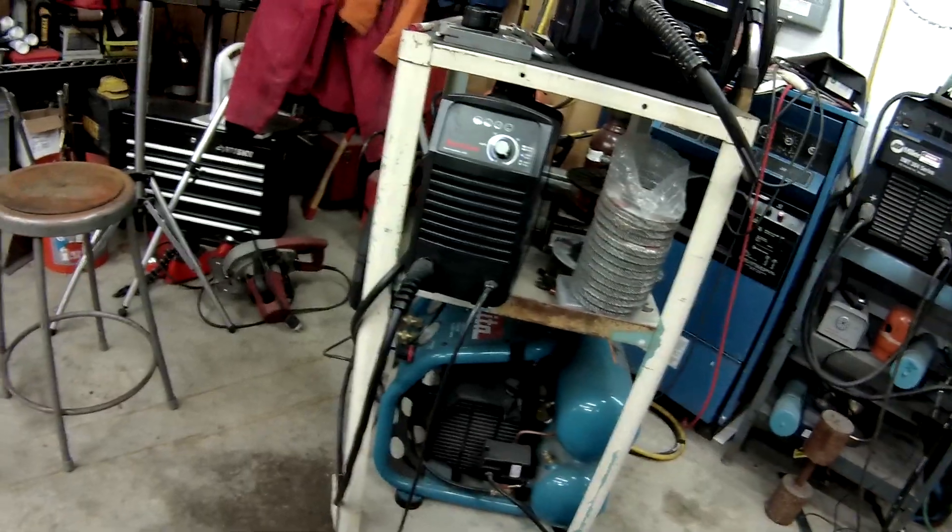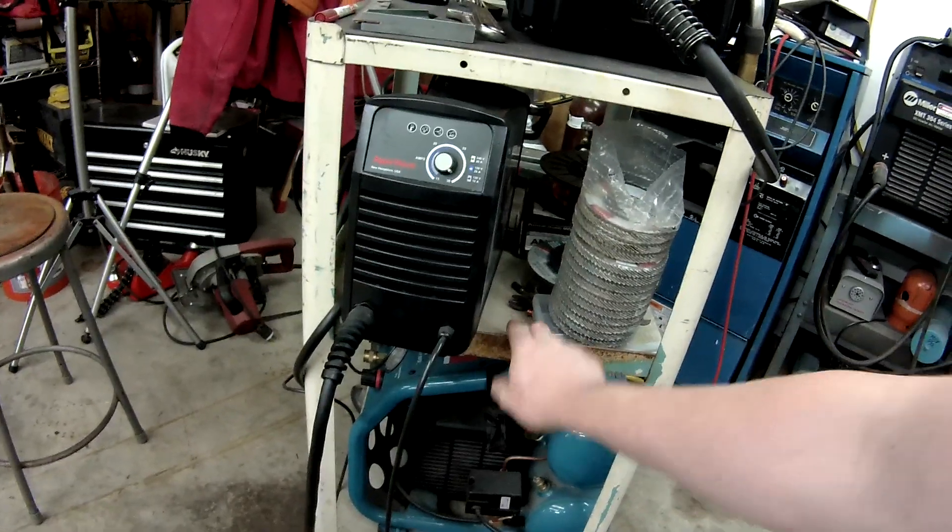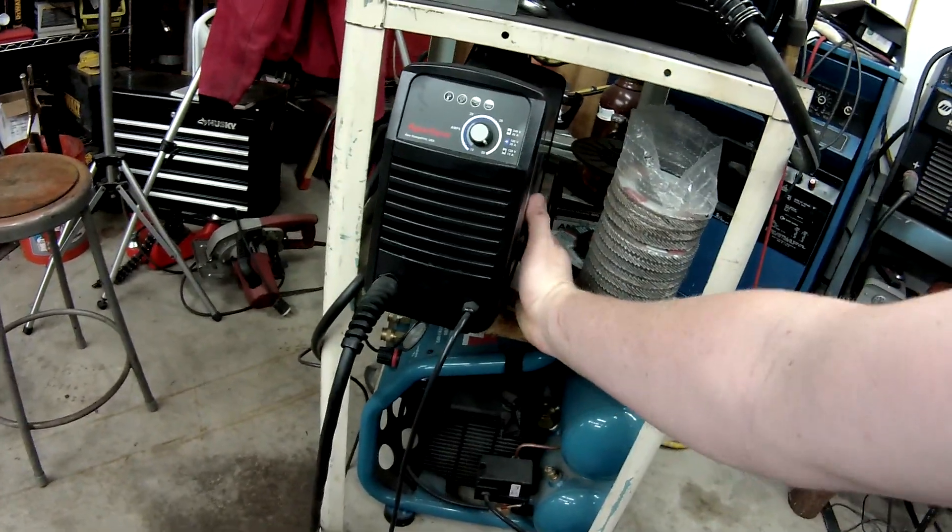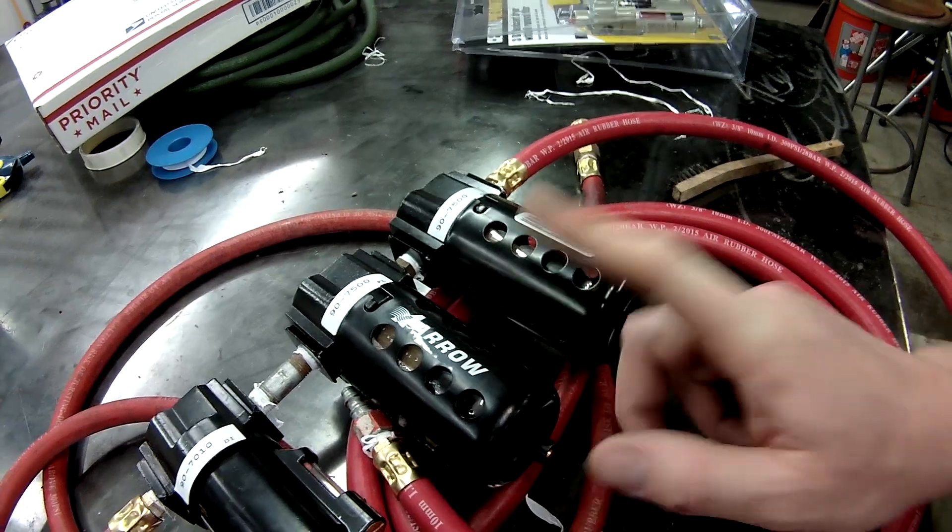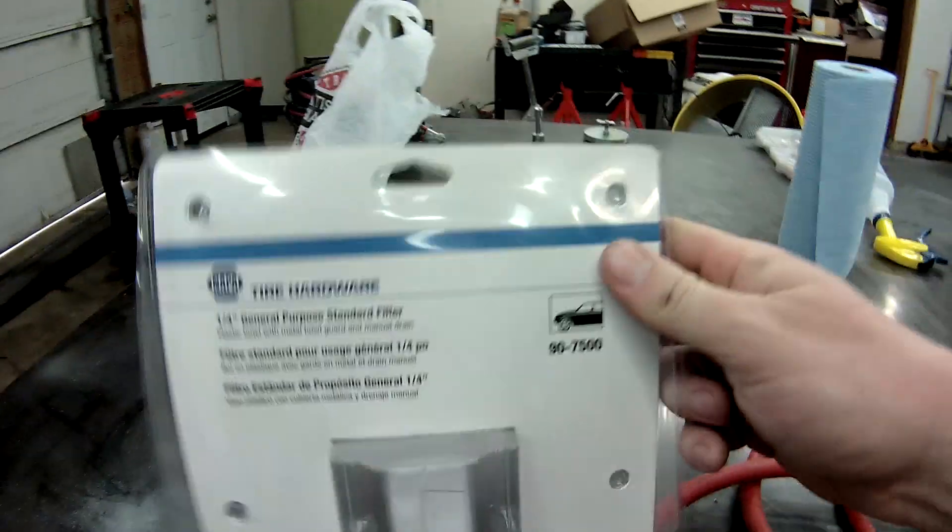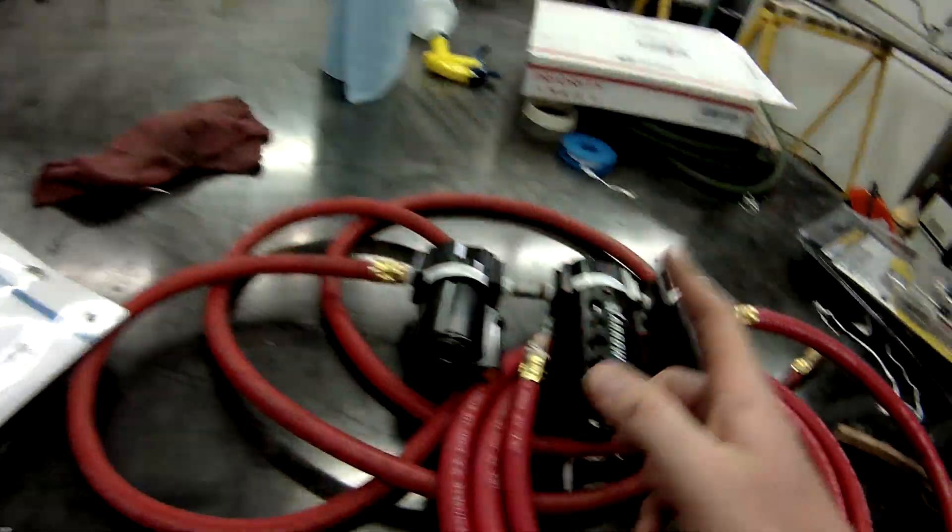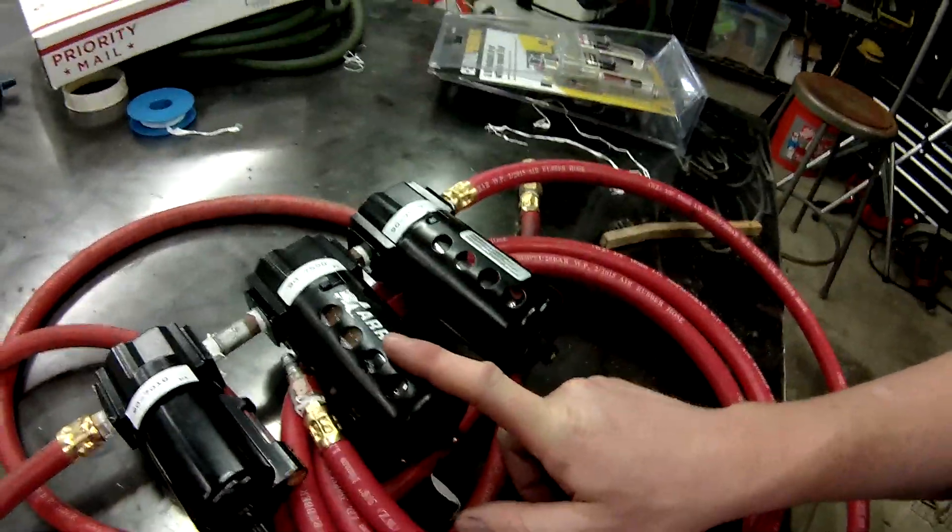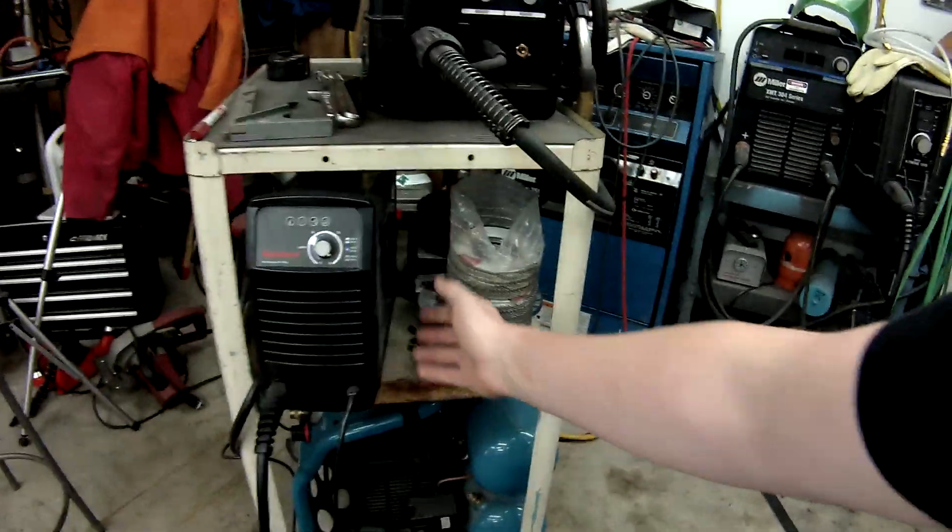Now this has a water separator built into it but I think it's not really meant for Indiana summers here. So basically what I got to do is get pretty clean dry air to this thing. And I had initially bought one of these guys, which is this Napa standard filter 90-7500 from my local Napa store, and I was using it and I still got moisture coming out of the internal water separator on this guy.